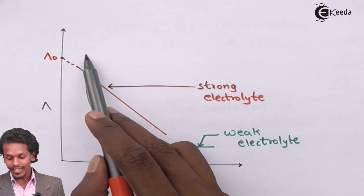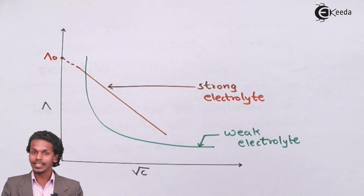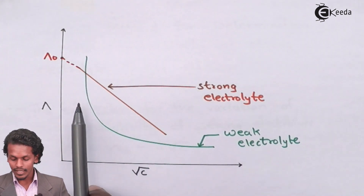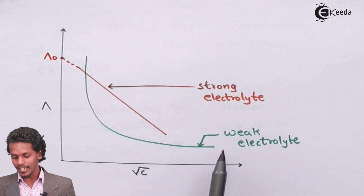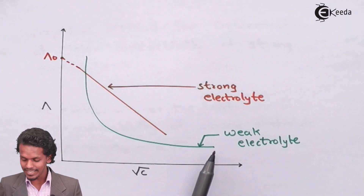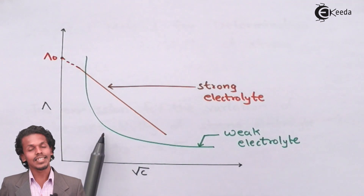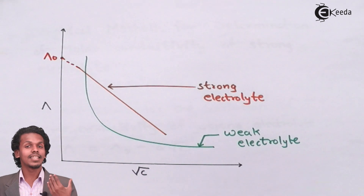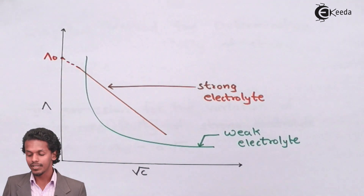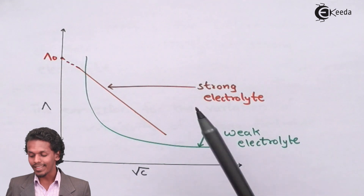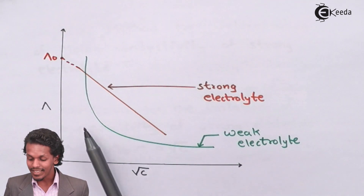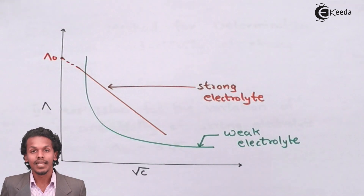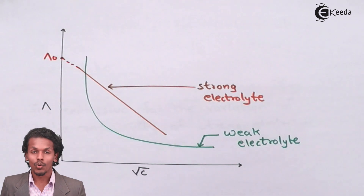For a weak electrolyte, we get a different kind of curve, as seen in the graph. The molar conductivity does increase when concentration decreases or when dilution increases, but the graph obtained for a weak electrolyte is not like that of a strong electrolyte. In this case, we are not able to measure lambda naught — the maximum limiting molar conductivity value.